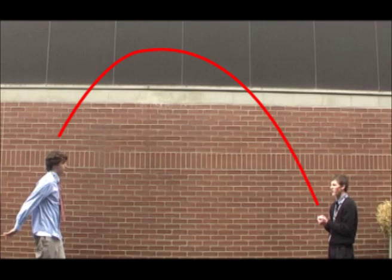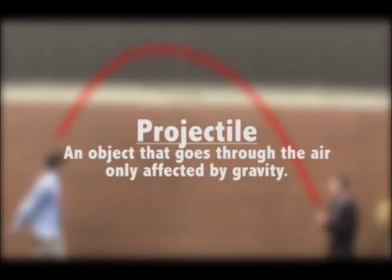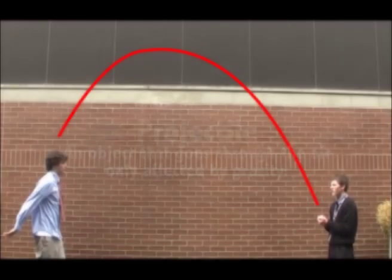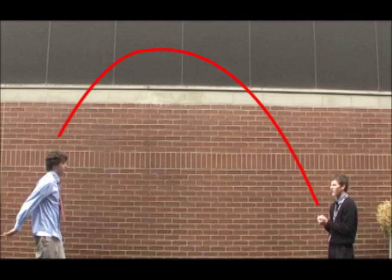Now let's study the projectile motion of the ball. A projectile is an object that goes through the air, only affected by gravity. It took a parabolic trajectory at its peak, pausing for the briefest moment.